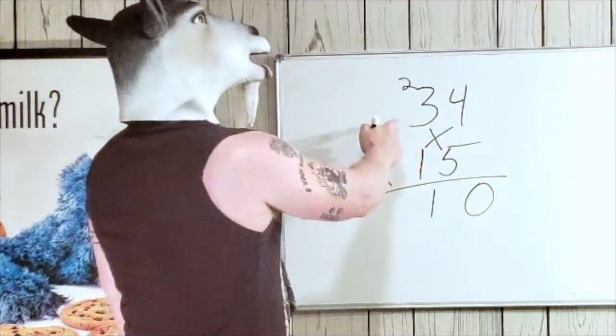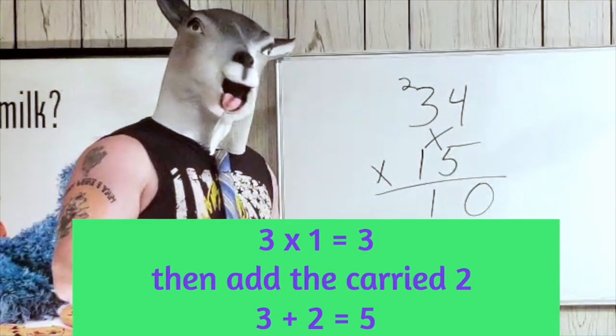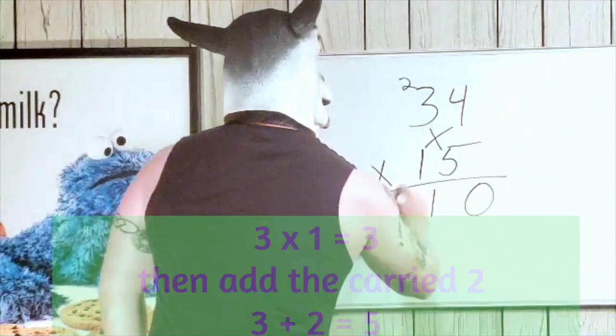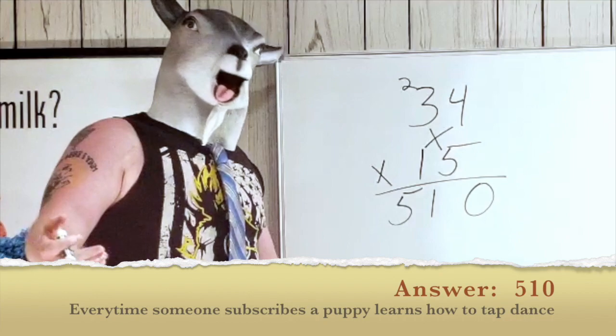Alright, and now what you're gonna do, the left hand side, so we had 3 times 1, right, plus that 2. 1 times 3 is 3 plus the 2, 5. 510. Alright, now isn't that much faster, right? Let it go, take care of you.